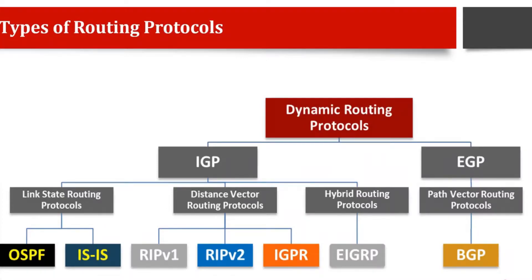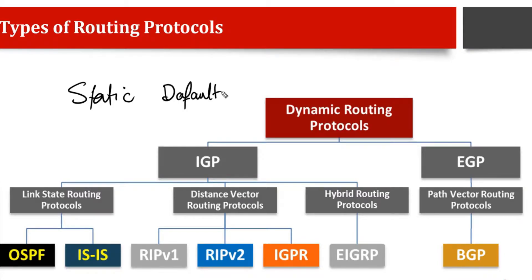What are the different types of routing protocols? There are many types but they are divided mainly into three categories. The first is static routing, in which we do manual configuration. Then there is default static routing, where we have a single destination. The third type is dynamic routing, which has many types of protocols. Today we will discuss the different types of routing protocols.